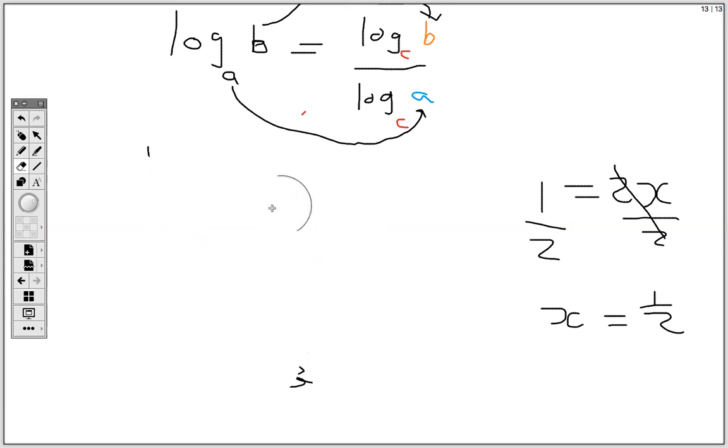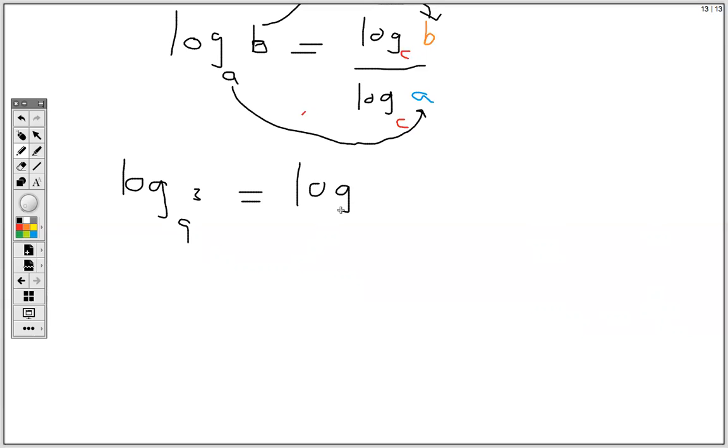Now we're going to do the same question. Let's apply the change of base formula to log base 9 of 3. So the base that I'll use is base 10 because we are acquainted to base 10 and it is on our calculator. So I have log base 10 of 3 over log base 10 of 9. Now some persons would enter this as is in their calculator and you should right away get a half or 0.5.